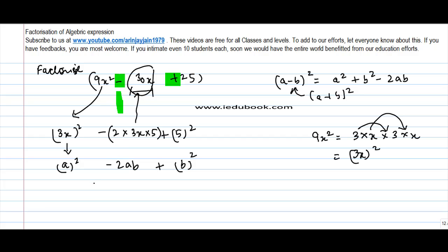So therefore, if this is equal to the identity a minus b whole square, I can read this as a is 3x minus b is 5 whole square. So this equation can be replaced by this, which is nothing but the factor of this equation.